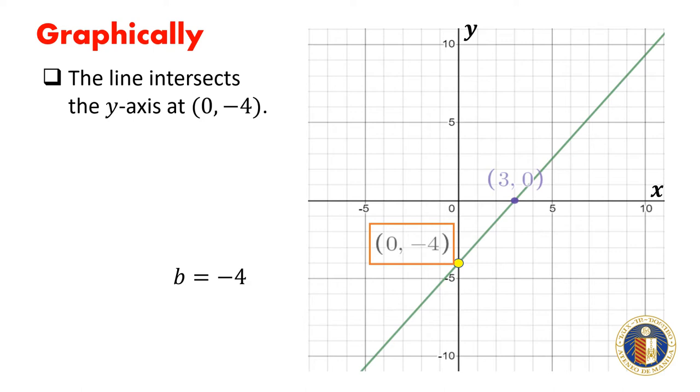If we move from the point 0, negative 4 to the point 3, 0, we move 4 units up. This means the vertical change is 4 and the horizontal change is 3.